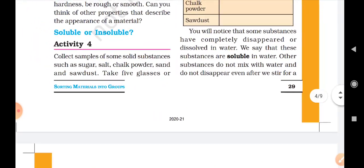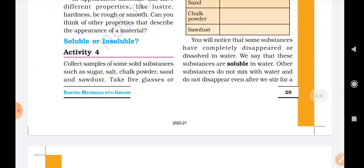So kids, we have seen Activity 4.3 in which we have some substances like sugar, salt, chalk powder, sand and sawdust. And we are going to do experiments on these substances to check whether they can dissolve in water or not. We need to take some beakers and observe whether the substances are dissolved in water.